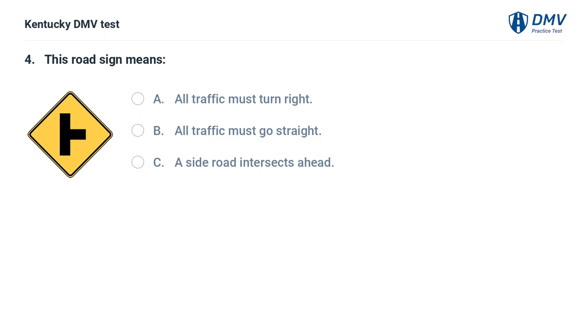This road sign means: A. All traffic must turn right. B. All traffic must go straight. C. A side road intersects ahead.